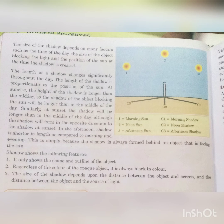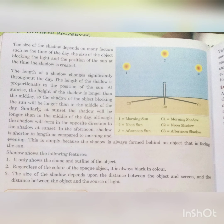At sunrise, the height of the shadow is longer than at midday — to shadow ki height sabse lambi hoti hai. The shadow of the object blocking the sun will be longer than in the middle of the day; dopahar se zyada subah ka shadow lamba hota hai. Similarly, at sunset, shadow will also be longer than at midday, although the shadow will form in the opposite direction — sunset ke opposite direction mein banega.